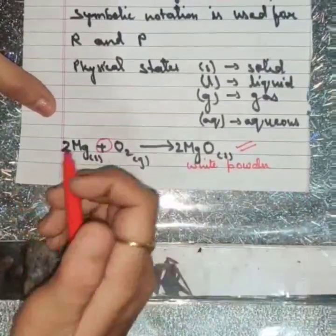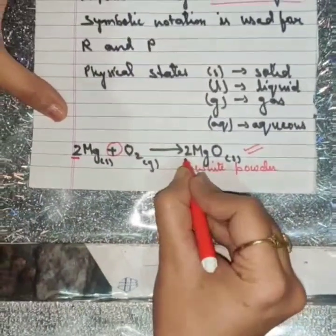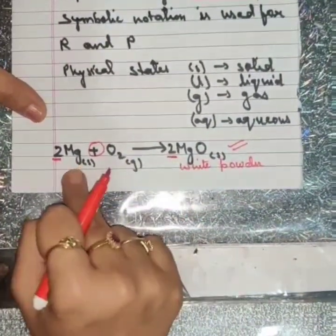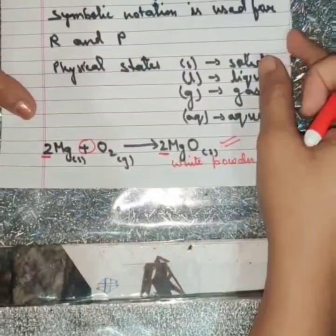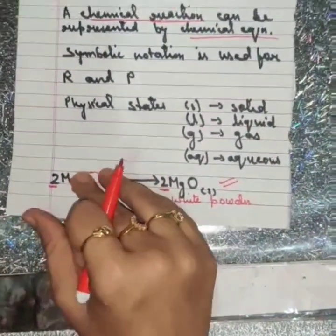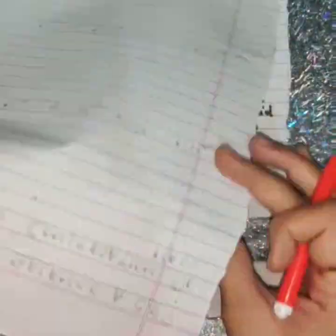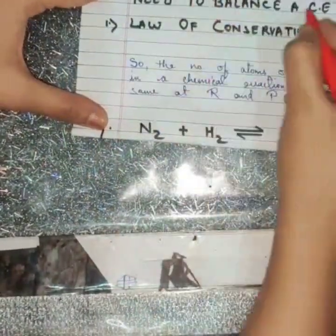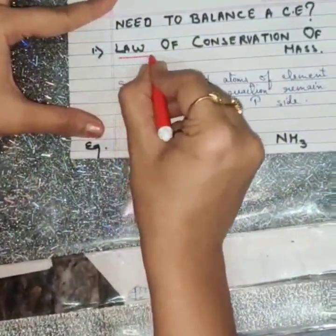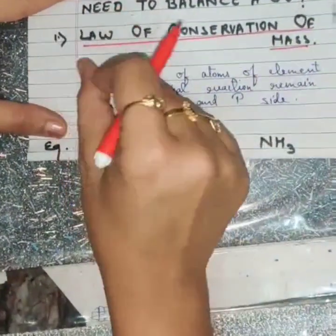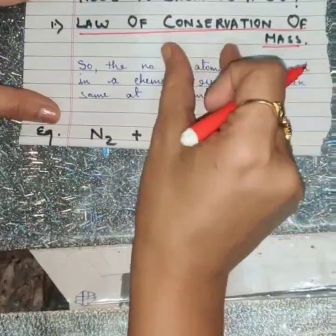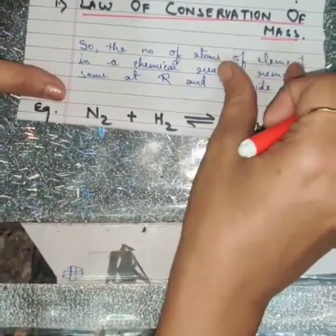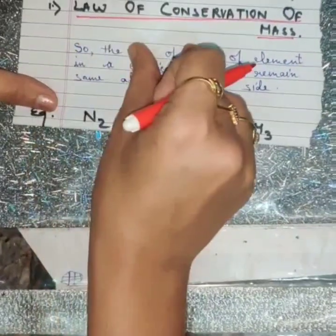There is an extra 2 before Mg and before MgO — this is for balancing the chemical equation. We need to balance a chemical equation in order to comply with the law of conservation of mass. This law states that matter can neither be created nor destroyed during the course of a chemical reaction — that is, the total mass of the reactants is equal to the total mass of the products.